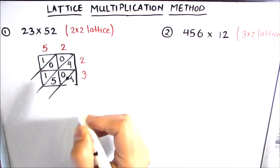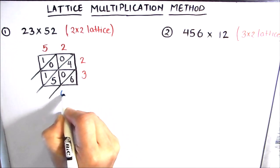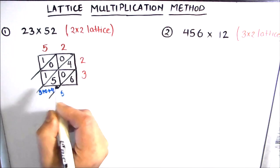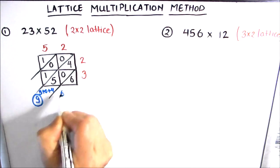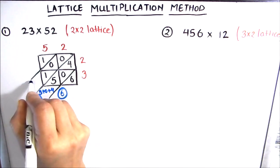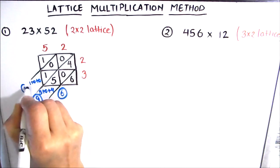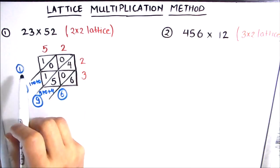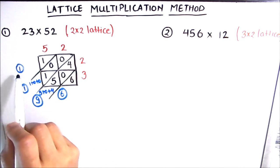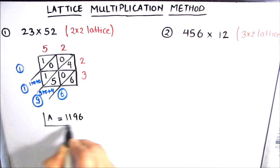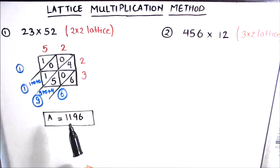Next we add the numbers along each diagonal. Starting from the bottom-right diagonal, we have only 6, so we write 6. The next diagonal gives us 5 plus 0 plus 4, which equals 9. Then 1 plus 0 plus 0, which equals 1. And the last diagonal has only 1. Reading from the top diagonal as the highest place value to the bottom diagonal as the lowest, our final answer is 1,196.